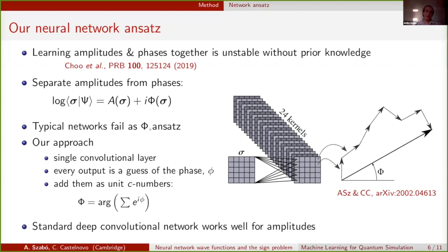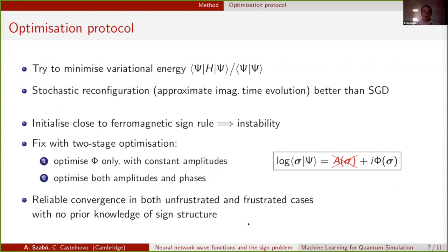On the other hand, we find that for amplitudes, a standard deep convolutional network works perfectly fine, so we just stick with those.